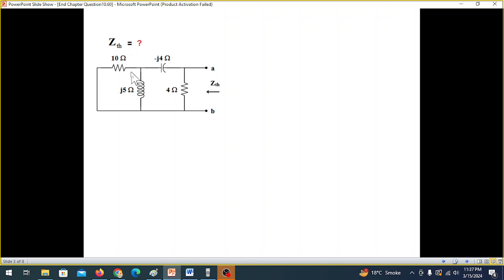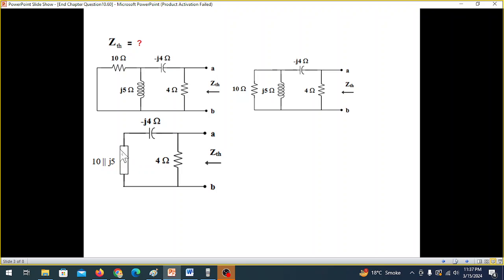So this was the circuit. And you can see these two are in parallel. You can redraw it. So 10 and J5 are in parallel. So we can write it like this. And now these two are in series.